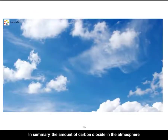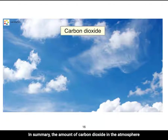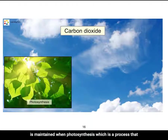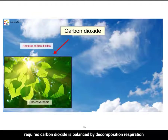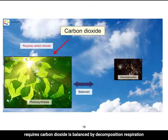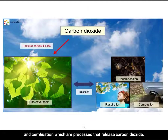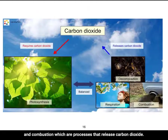In summary, the amount of carbon dioxide in the atmosphere is maintained when photosynthesis — which requires carbon dioxide — is balanced by decomposition, respiration, and combustion, which are processes that release carbon dioxide.